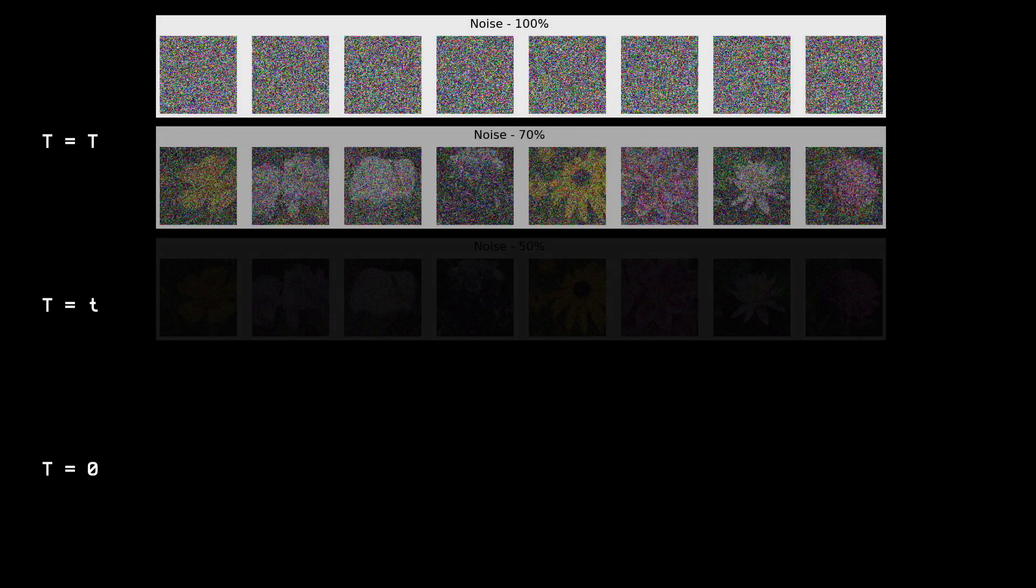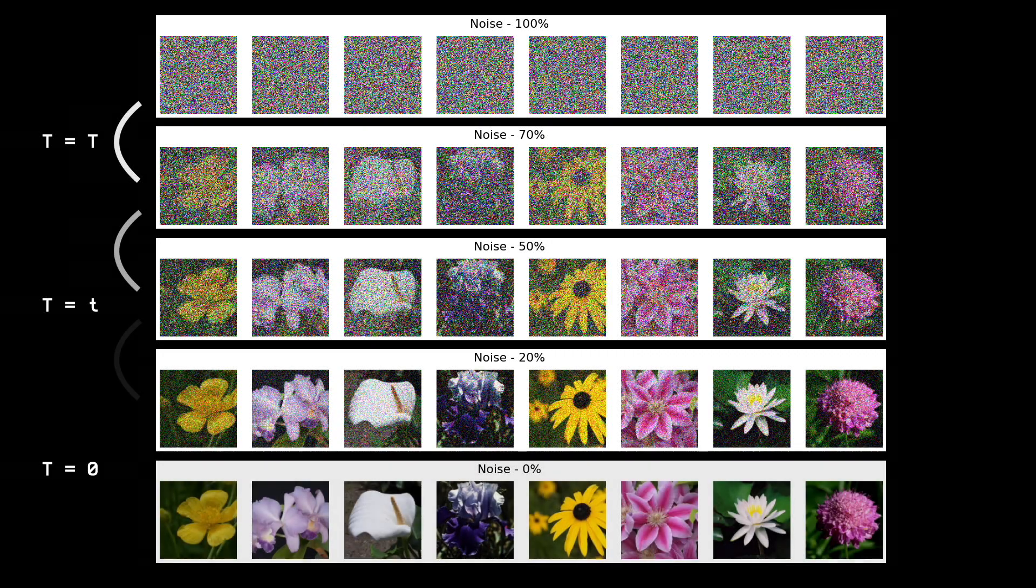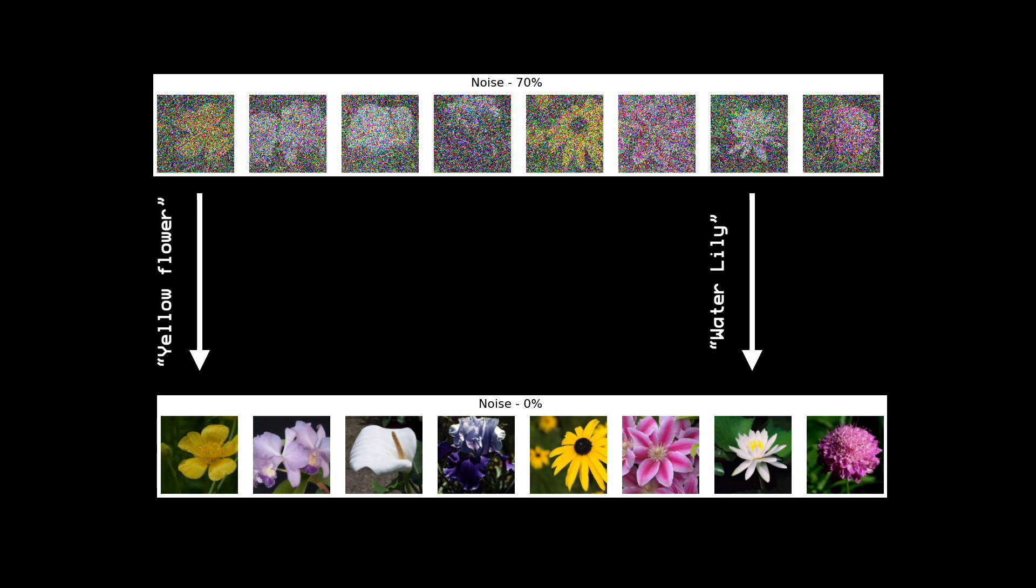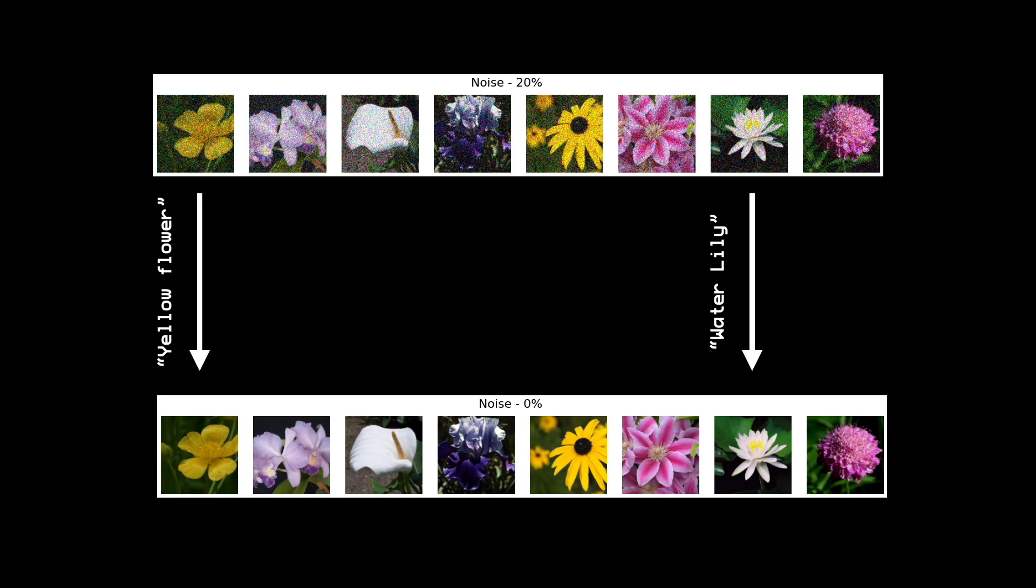In recent work, researchers have found great success by training conditional UNets. For example, in the diffusion model framework, we can train a UNet that has been conditioned on both time and conditioning text. This helps us guide a generative process to convert Gaussian noise into any image under the sun given enough training data.